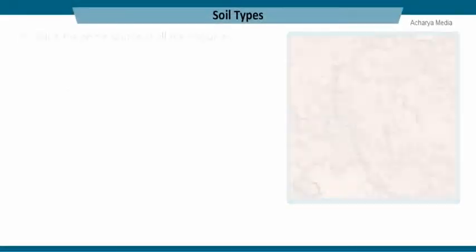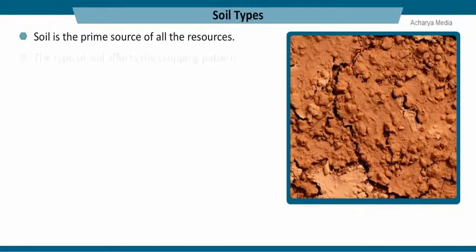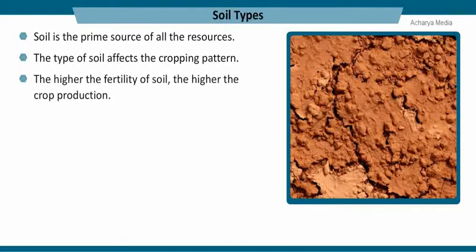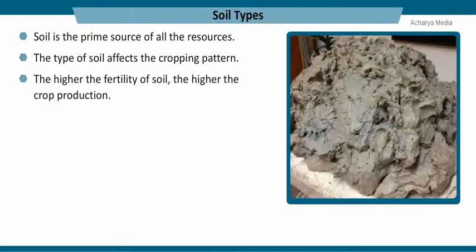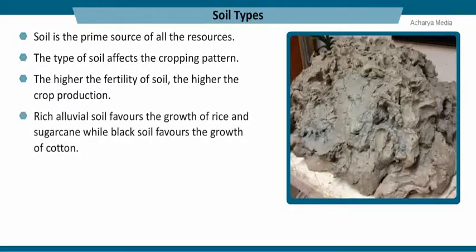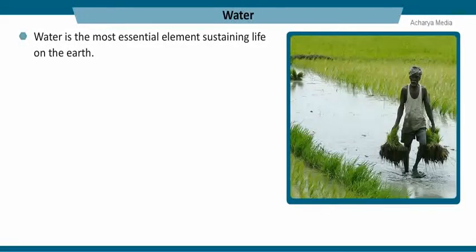Soil is the prime source for all resources. The type of soil affects the cropping pattern — the higher the fertility of the soil, the higher the crop production. Rich alluvial soil favors the growth of rice and sugarcane, while black soil favors the growth of cotton.